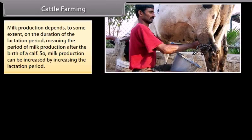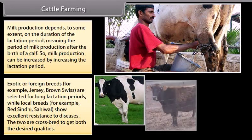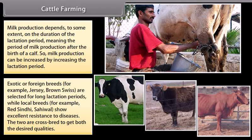Milk production depends to some extent on the duration of the lactation period, meaning the period of milk production after the birth of a calf. So milk production can be increased by increasing the lactation period. Exotic or foreign breeds, for example Jersey and Brown Swiss, are selected for long lactation periods, while local breeds, for example Red Sindhi and Sahiwal, show excellent resistance to diseases. The two are cross-bred to get both desired qualities.